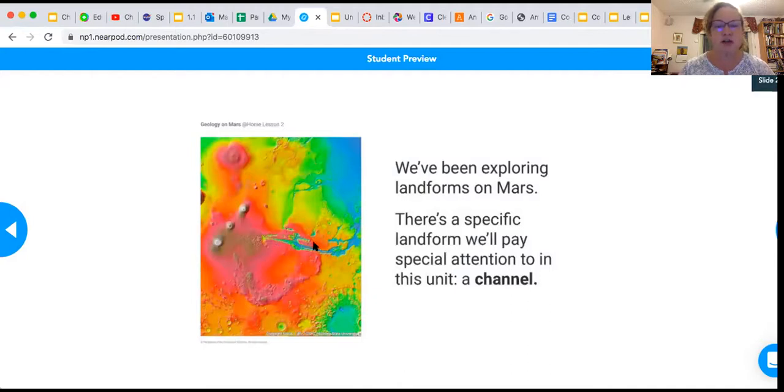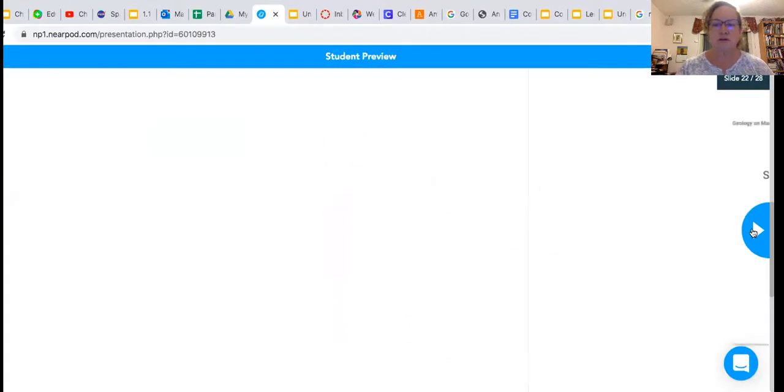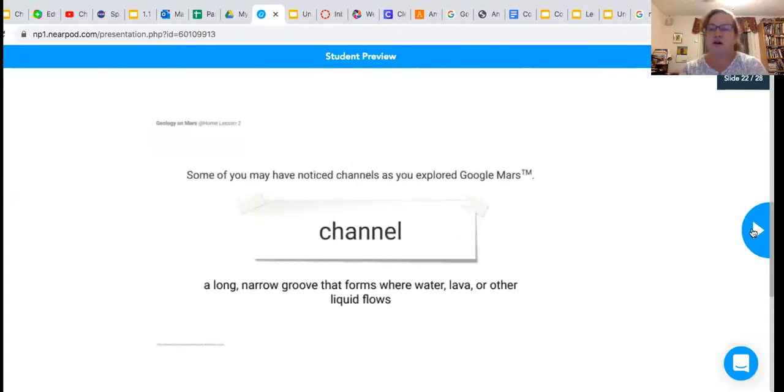It kind of looks like somebody scratched through that picture. So a channel is a long, narrow groove that forms where water, lava, or other liquid flows.